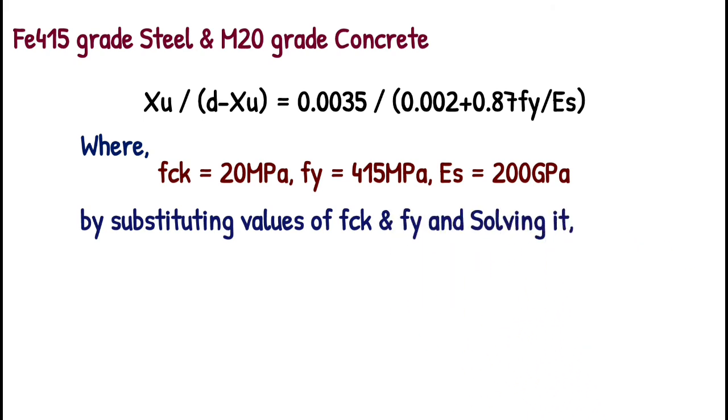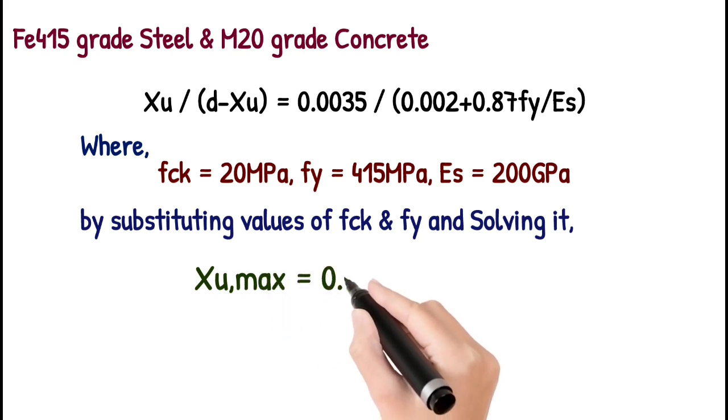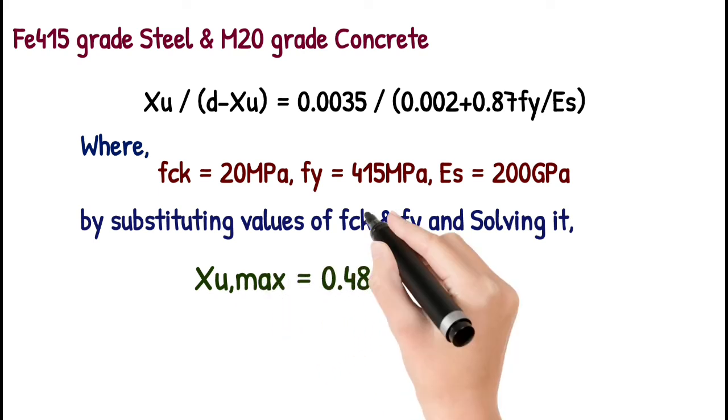Es will be always 2 times 10 raised to 5 for this steel. By solving we get Xu max or Xu limited equals 0.48d.